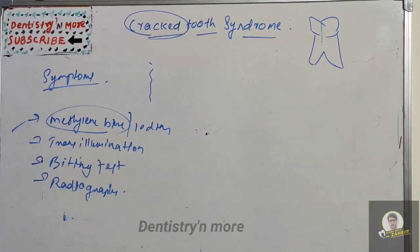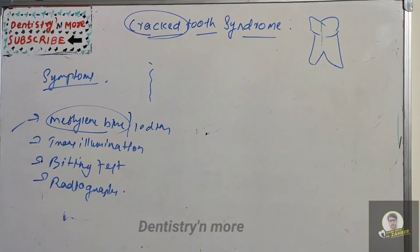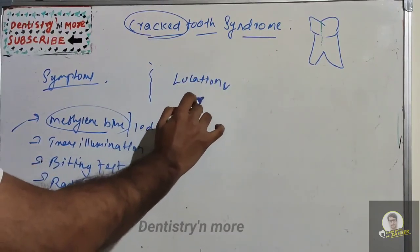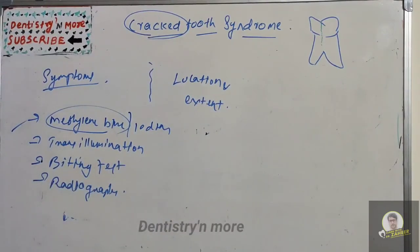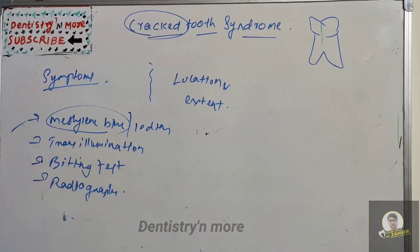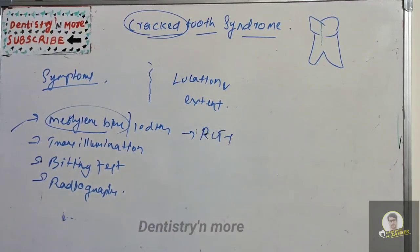For management, the first step is identifying the proper etiology. The key challenge with Crack Tooth Syndrome is clearly understanding the location and extent of the crack, as these factors are vital for achieving a good prognosis. Immediate therapy involves splinting and stabilizing the tooth using wire methods or bonding materials.